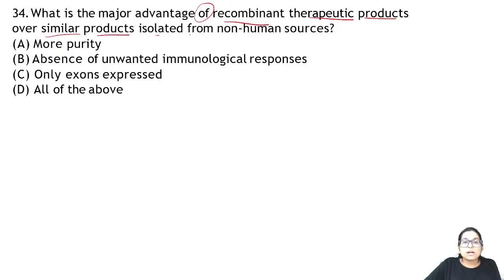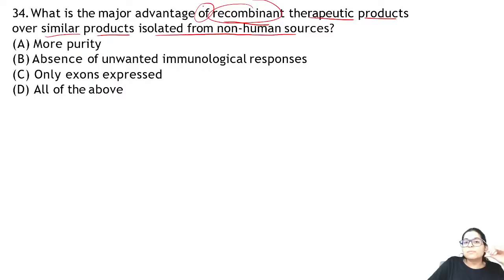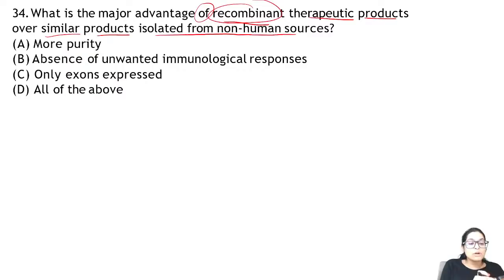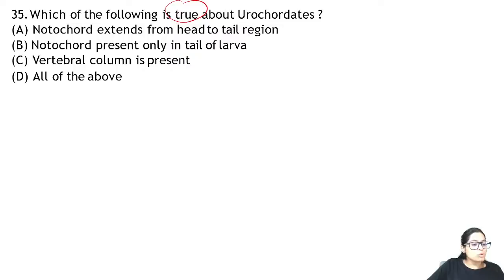Zoology Question 34: what is the major advantage of recombinant therapeutic products over similar products isolated from non-human sources? The main advantage is that allergy does not occur. For example, earlier insulin was obtained from slaughtered pigs — people had immune responses and allergies. But with recombinant insulin (Humulin), allergies stopped.